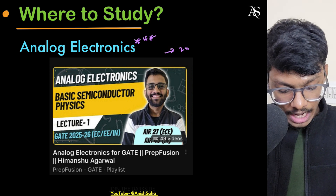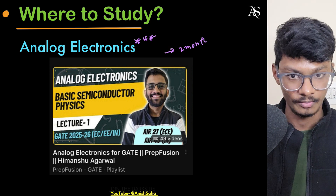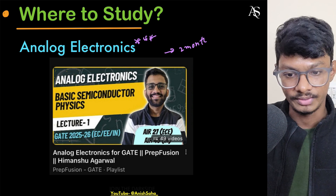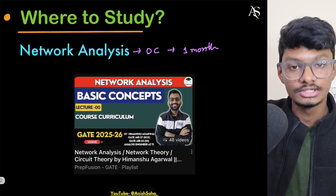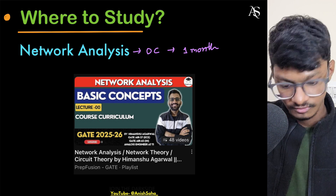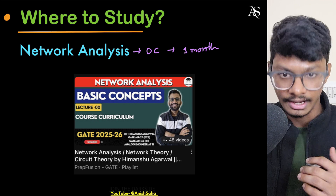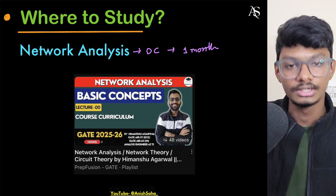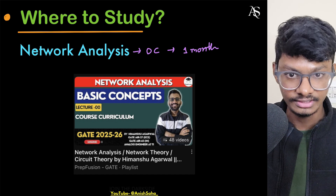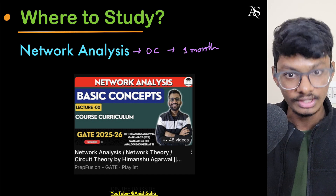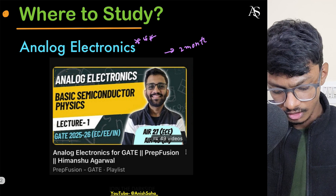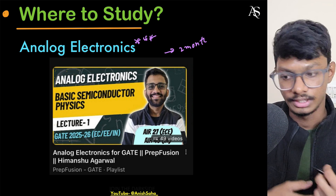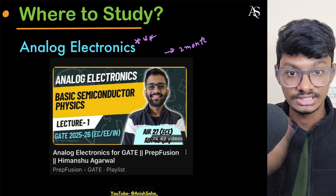I'm not mentioning specific topics here — you can go through my previous video where I mentioned topics for network theory and analog electronics. For network analysis, the most important ones are transient analysis of RC and RL circuits, and Thevenin's theorem and other theorems. You should study everything to understand the concepts, and for the written test you also need everything.